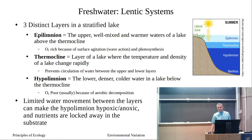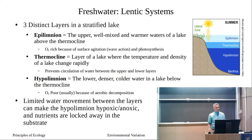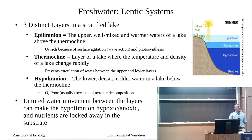The epilimnion is our warm surface area. Below that is the thermocline — the layer of the lake where temperature and density change rapidly. Warmer water is less dense and floats on top of colder water. At the thermocline, there's a drastic change in temperature and therefore a drastic change in density. If you've swum in a deeper lake, you've probably felt this thermocline — warm at the surface, then a cold layer down by your feet.